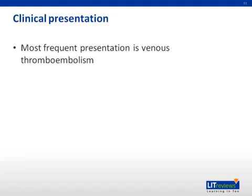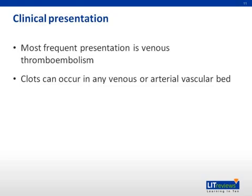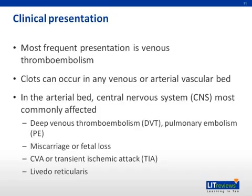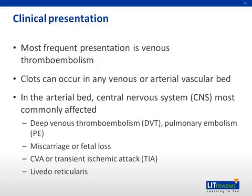In APS, clots in the venous circulation with deep venous thrombosis or pulmonary embolism are the most common. However, clots can occur in any venous or arterial vascular bed. In the arterial circulation, a cerebral vascular accident, CVA, is most common. Other manifestations include pregnancy complications such as miscarriages, fetal loss, and preeclampsia, which can result in premature delivery and adverse fetal outcomes. Less common manifestations include heart valve disease, typically mitral and aortic regurgitation, and coronary artery disease. The renal, mesenteric, and portal vasculature are rarely involved.